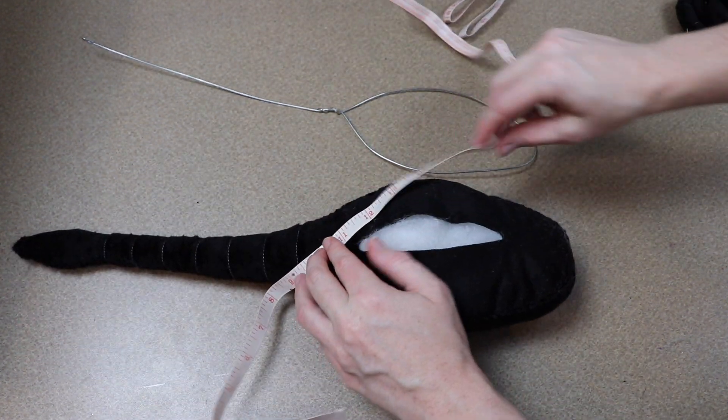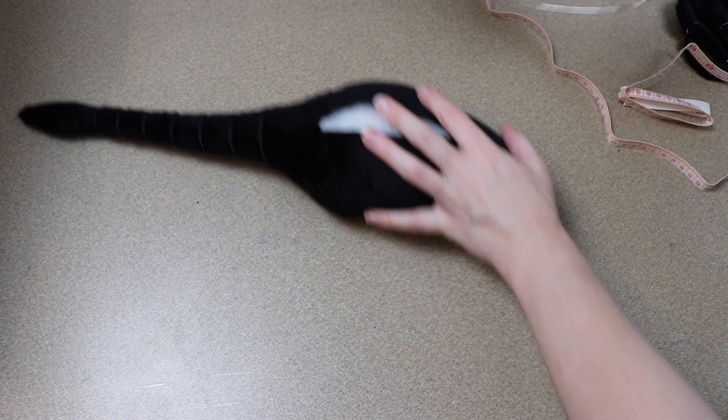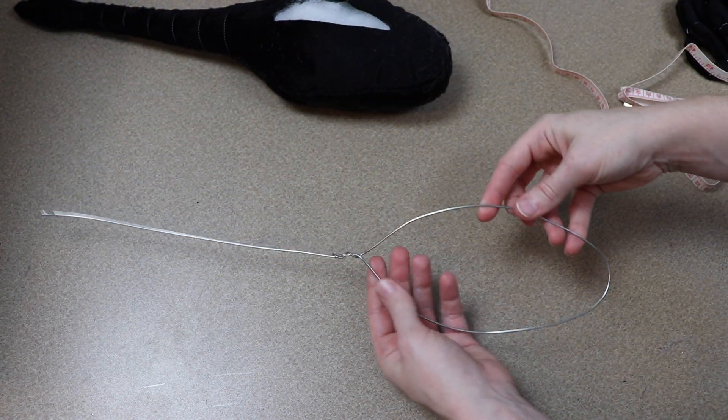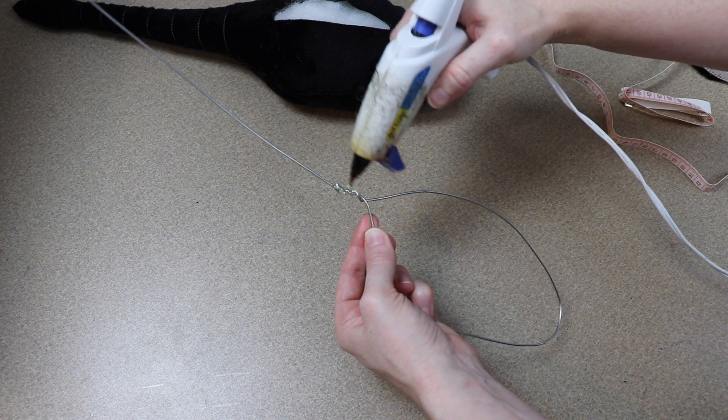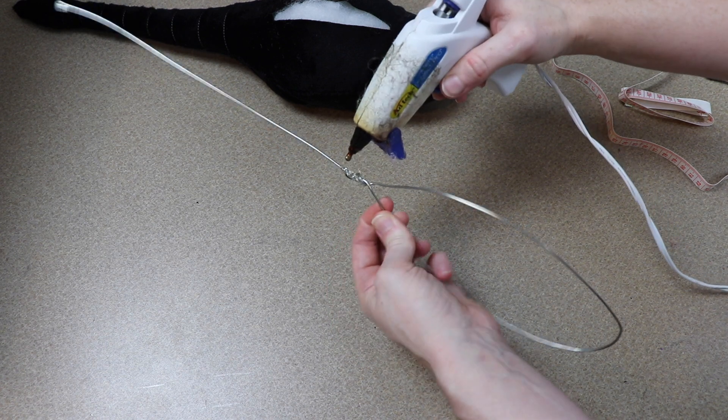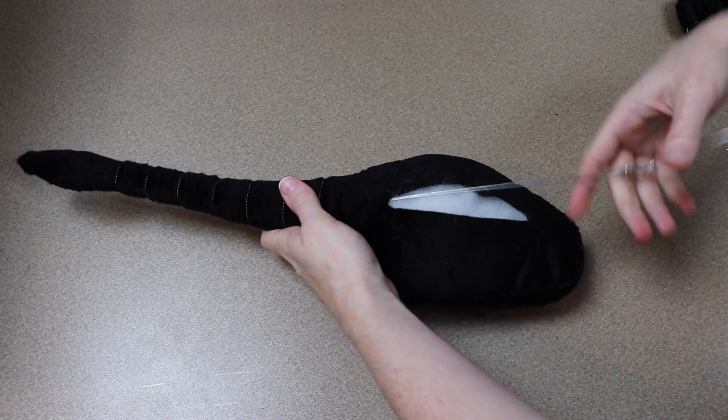So I made a very simple wire frame to kind of go inside the body. It's just kind of like a spoon shape similar to how we did the pattern. And where I connected the wire where I bent it and twisted it together, I made sure to cover that in hot glue so there wasn't any sharp points. So I'm going to take this and put it inside of the body and then we can close our body up.